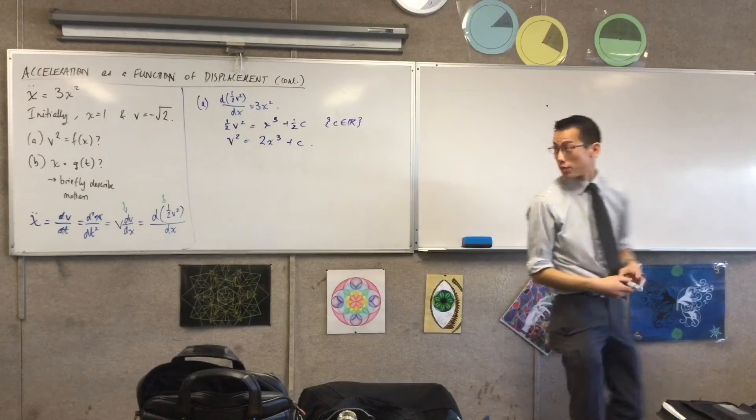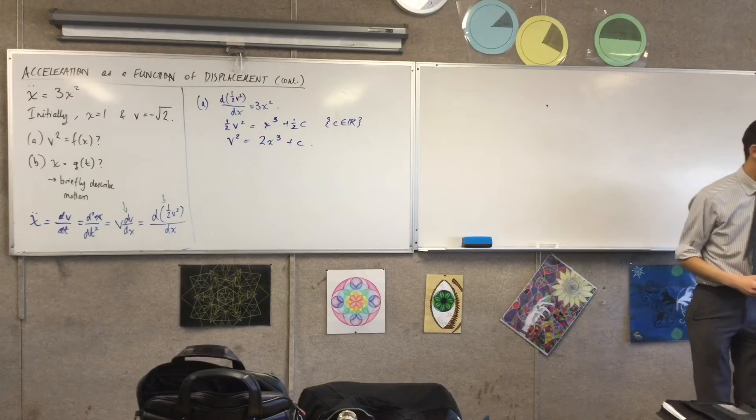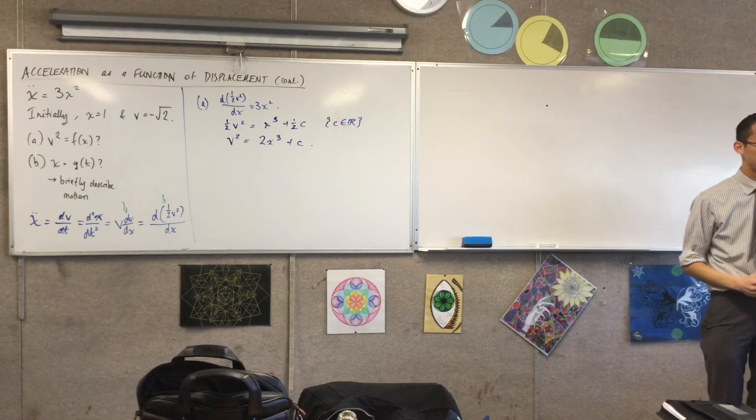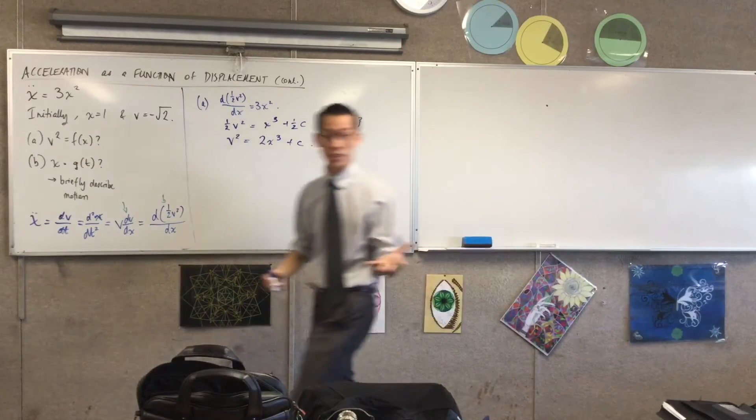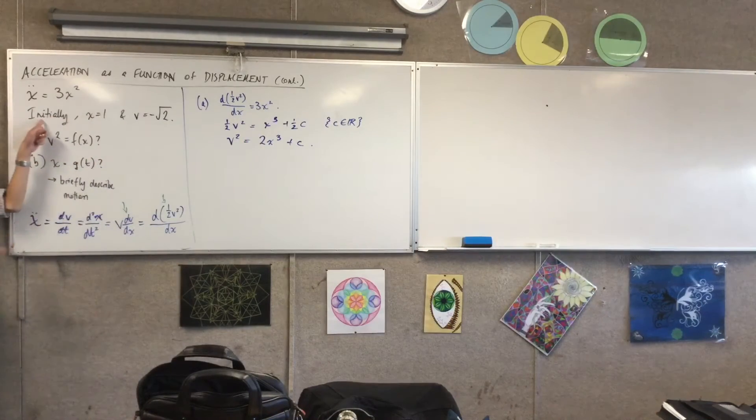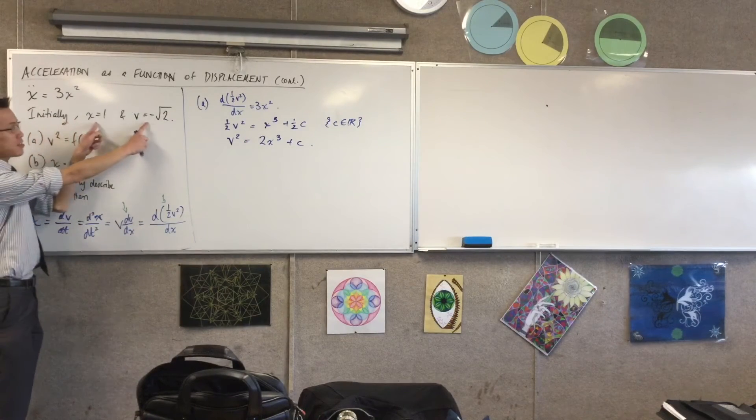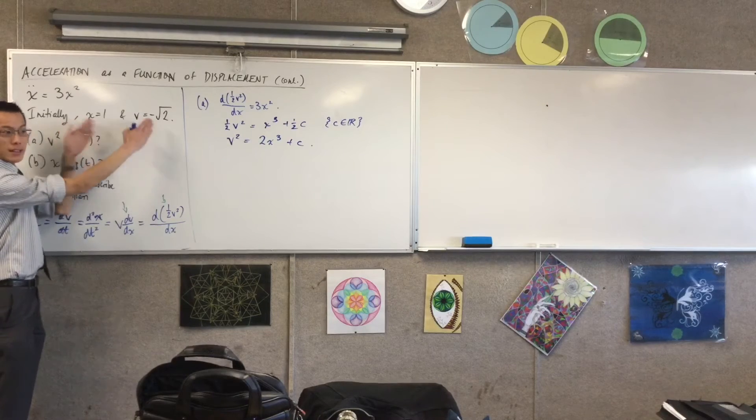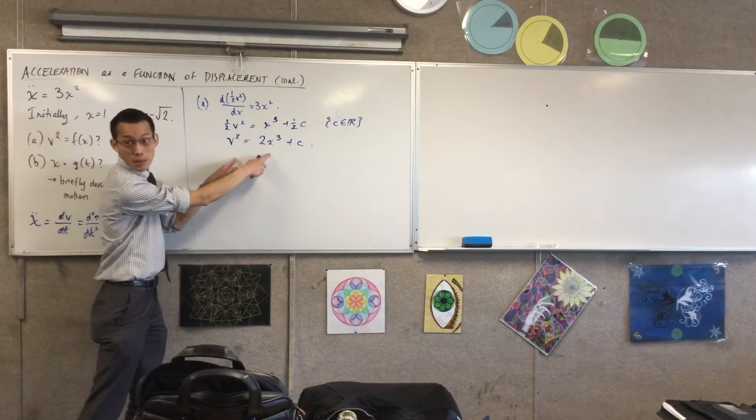So I've got an expression for v squared, but I have a constant hanging around there. What do I do to get rid of this constant? Substitute the initial conditions. Very good, I have conditions. They happen to be initially, so these two are happening at the same time, so I can substitute them in here. I can say when x equals 1, v equals negative 2.